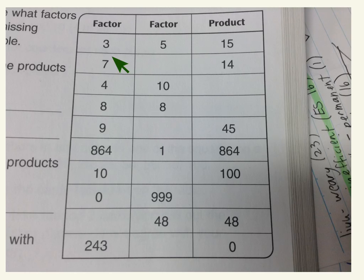With our chart here, we just need to fill in the different factors and products. Here we have 3 and 5. We know 3 times 5 is 15, so that one is pretty simple. When you have two factors, that will be the easiest one.